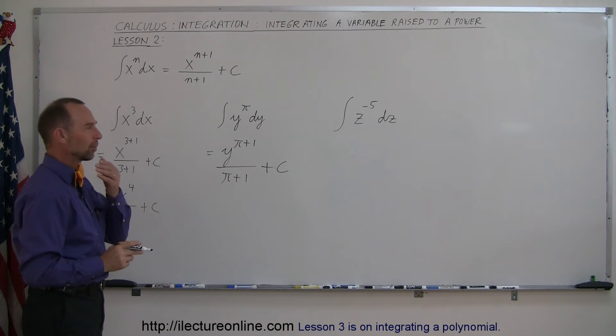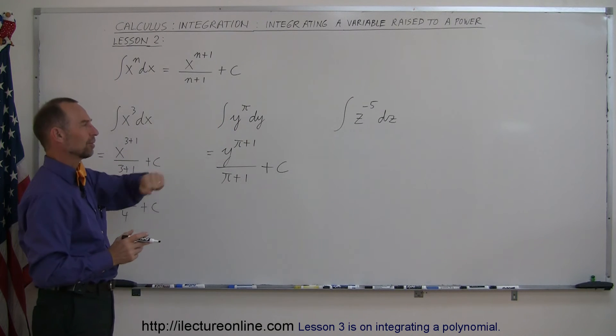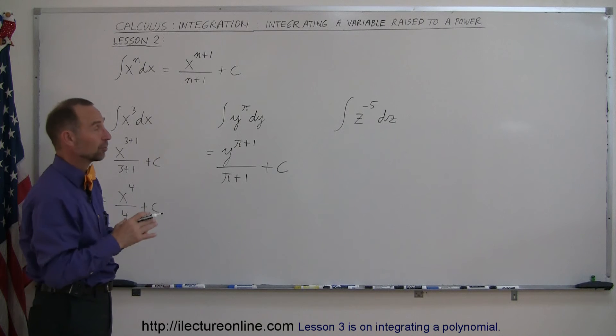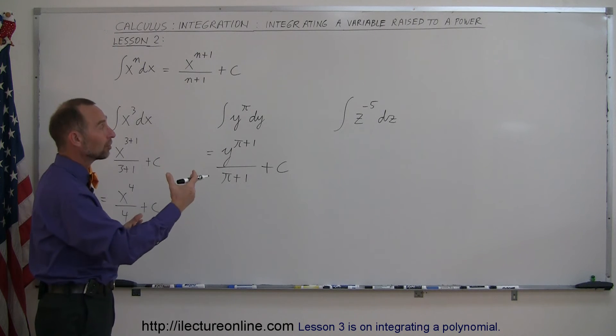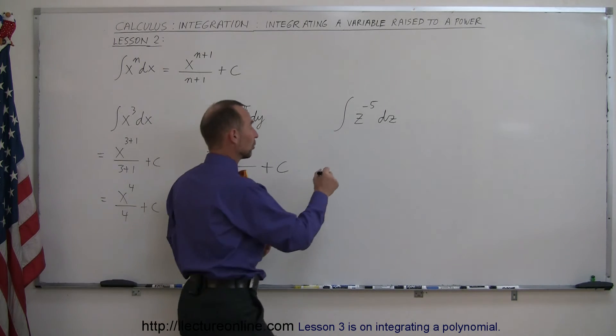In our last example, we say, well, what do I do here? Z to the minus five, but the rule is no different here. Doesn't matter what the exponent is, always add one to the exponent divided by the new exponent.